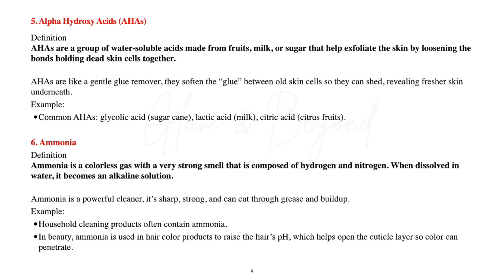Number six, ammonia. Ammonia is a colorless gas with a very strong smell, composed of hydrogen and nitrogen. When dissolved in water, it becomes an alkaline solution. Ammonia is a powerful cleaner — sharp, strong, and can cut through grease and buildup. Household cleaning products often contain ammonia. In beauty, ammonia is used in hair color products to raise the hair's pH, which helps open the cuticle layer so color can penetrate.